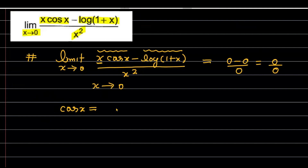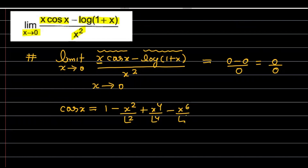For cos(x), if I talk about the expansion, it is equal to 1 − x²/2! + x⁴/4! − x⁶/6! + … up to infinity.